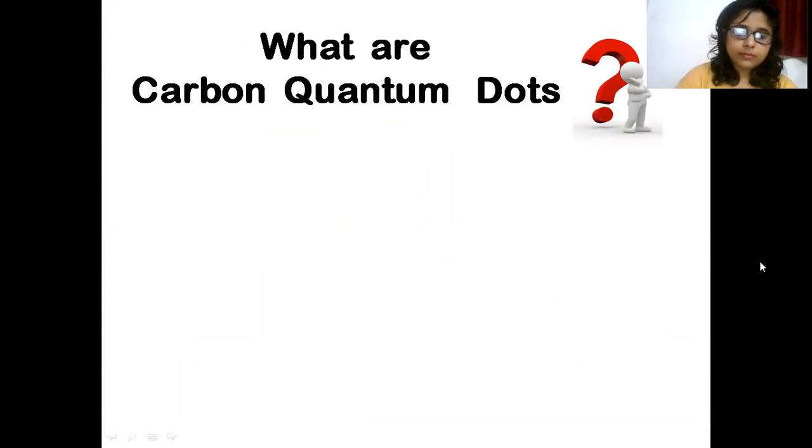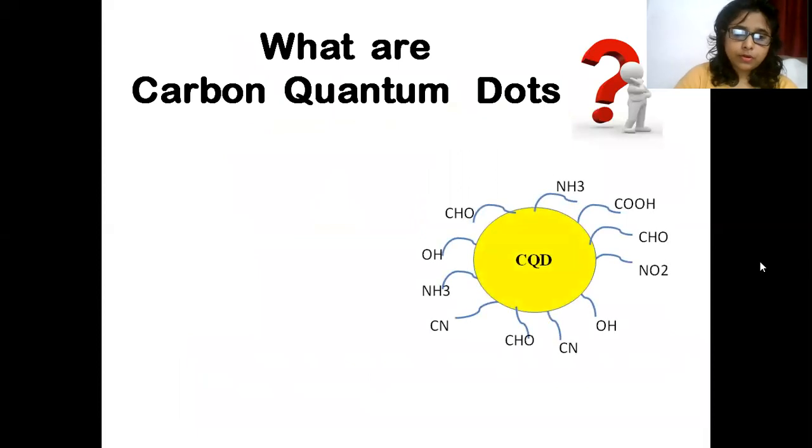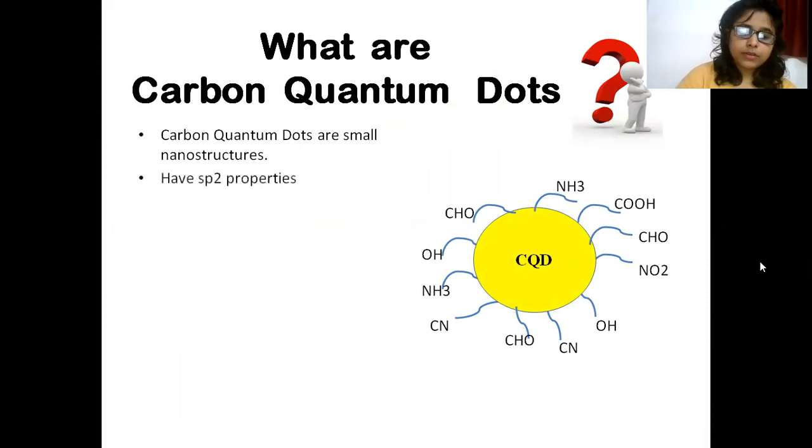Carbon Quantum Dots are nanostructures having sp2 properties. Several functional groups are found on the surface of Carbon Quantum Dots as shown in the figure.